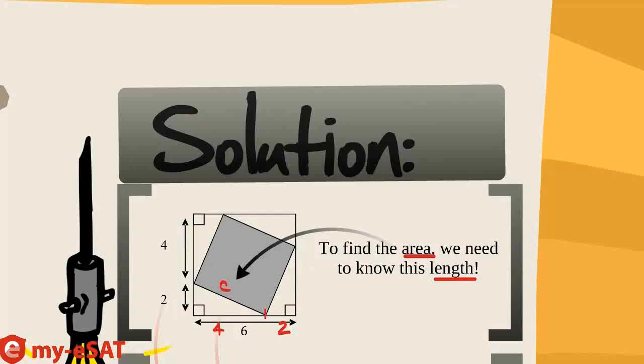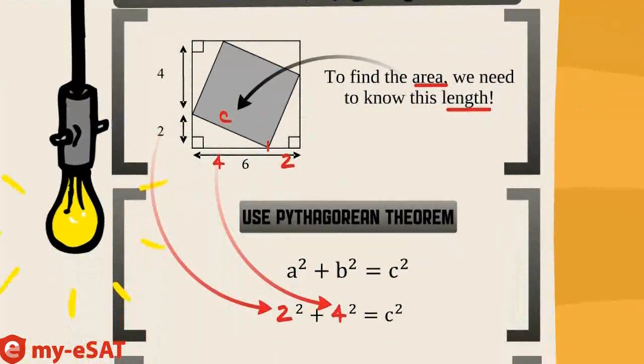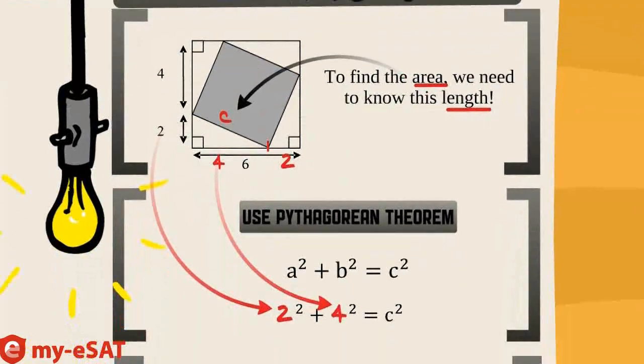Well, if you notice, the inside square sides actually form triangles with the outside square. And not just normal triangles, but right triangles. That means we can use Pythagorean's Theorem to figure out the length of the side of the square. Yes!